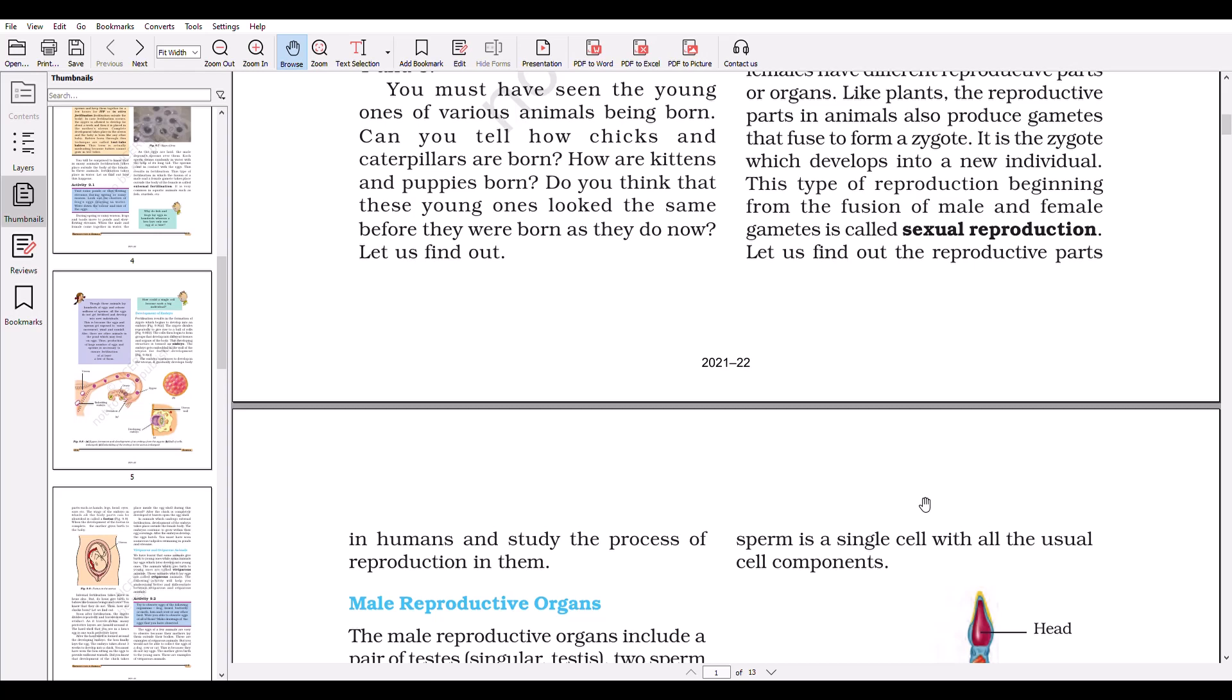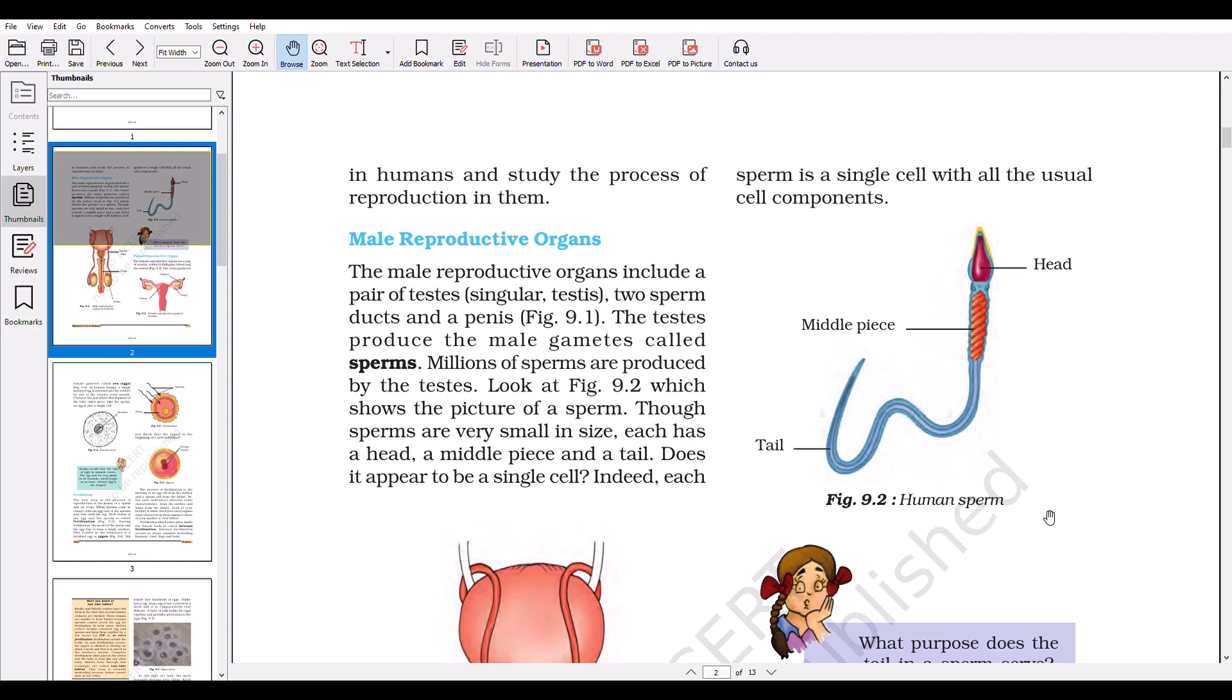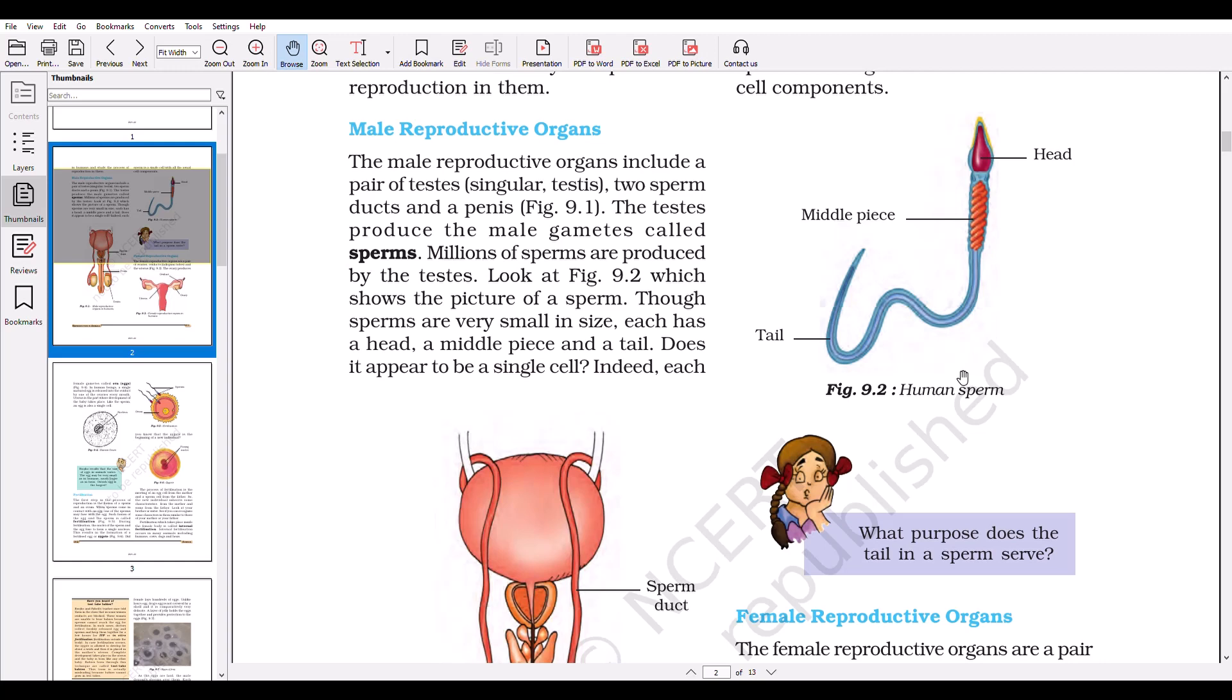Let us find out the reproductive parts in humans and study the process of reproduction. In figure 9.2, we can see a human sperm. It has a typical head, middle piece, and a long tail. The tail helps it move around. The male reproductive organs include a pair of testes, two sperm ducts, and a penis. The testes produce the male gamete called sperms. Millions of sperms are produced by the testes. Though the sperms are very small, each has a head, middle piece, and a tail.